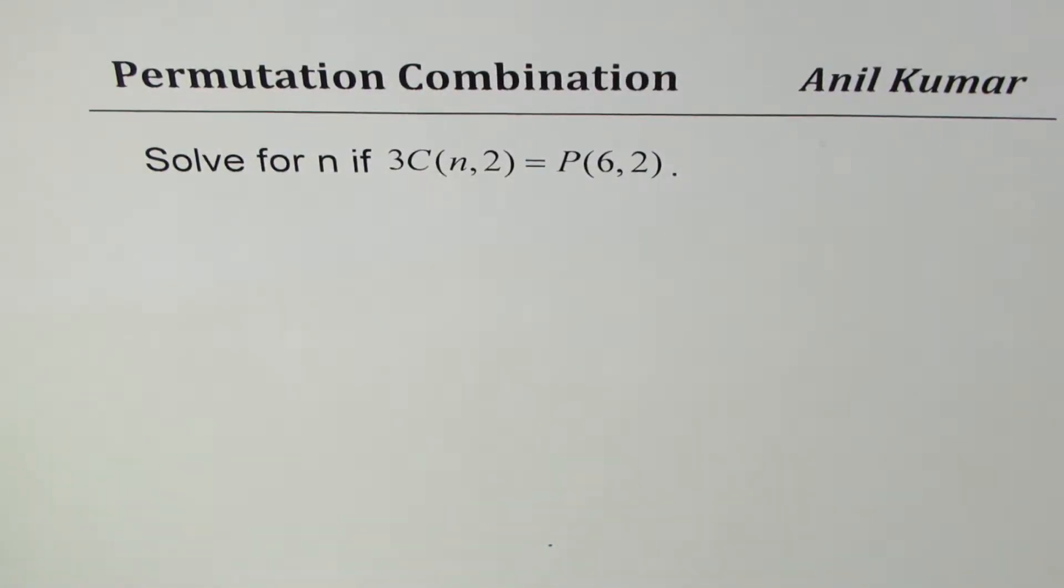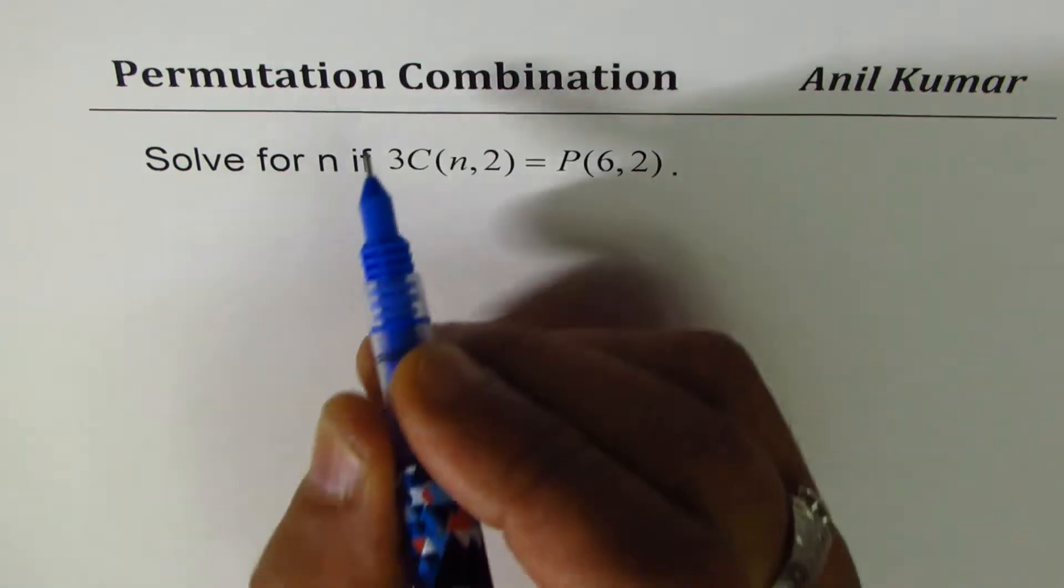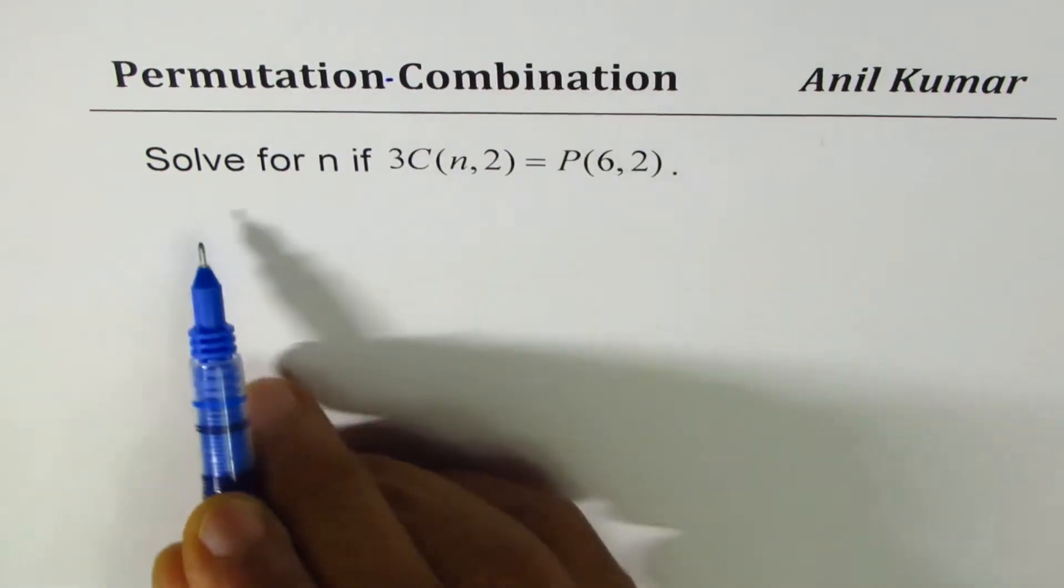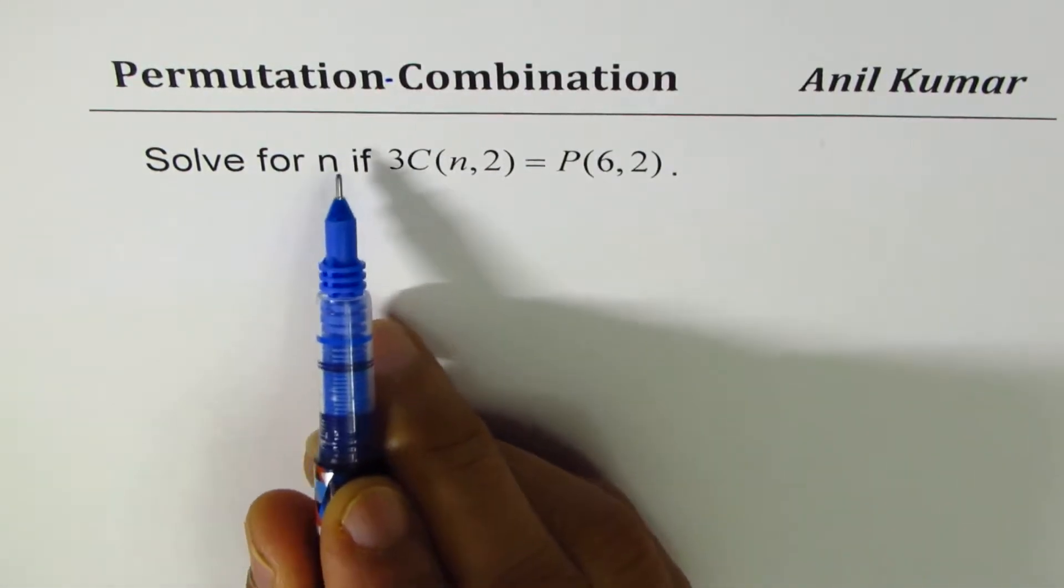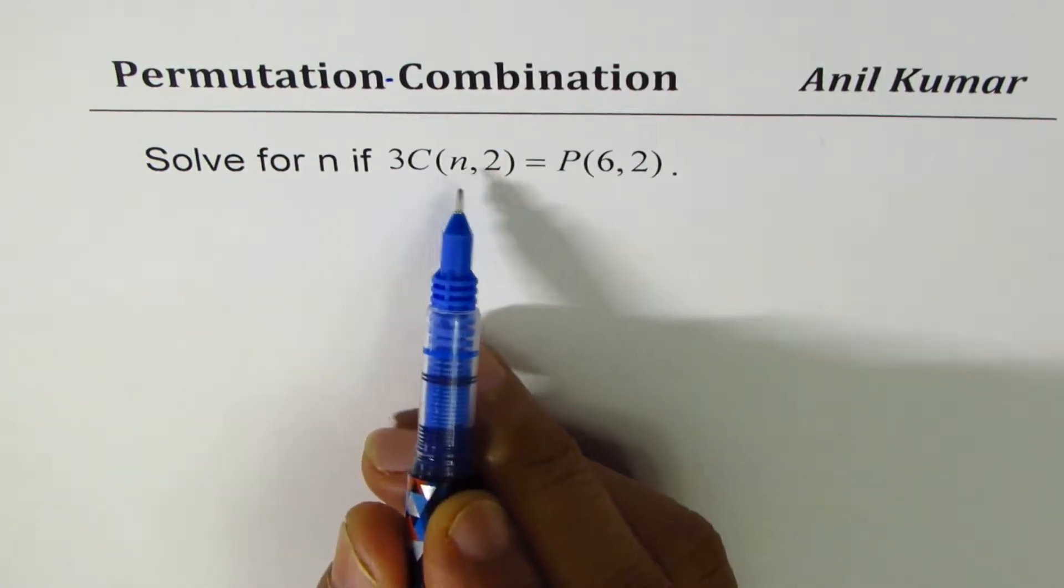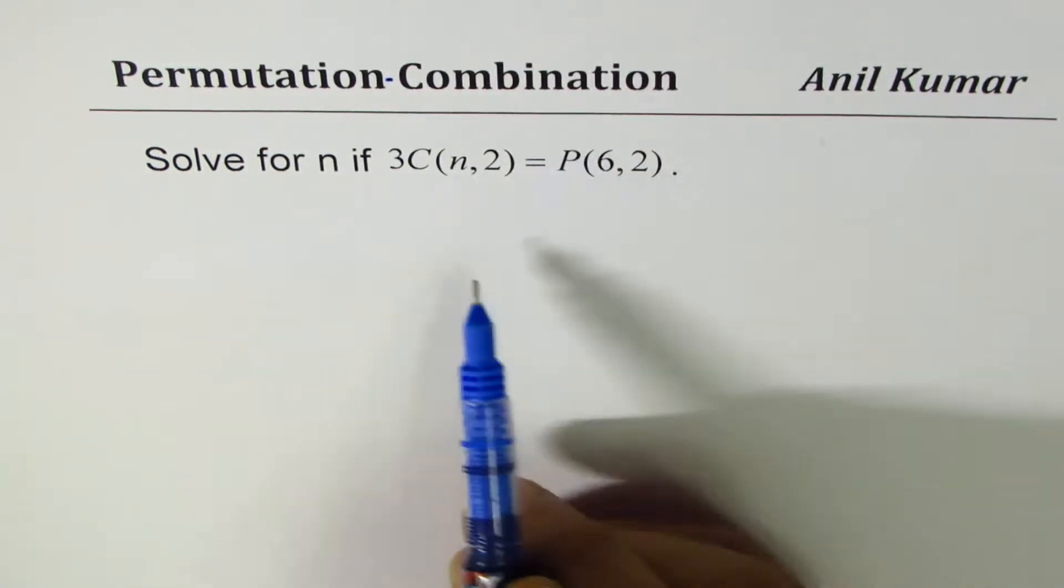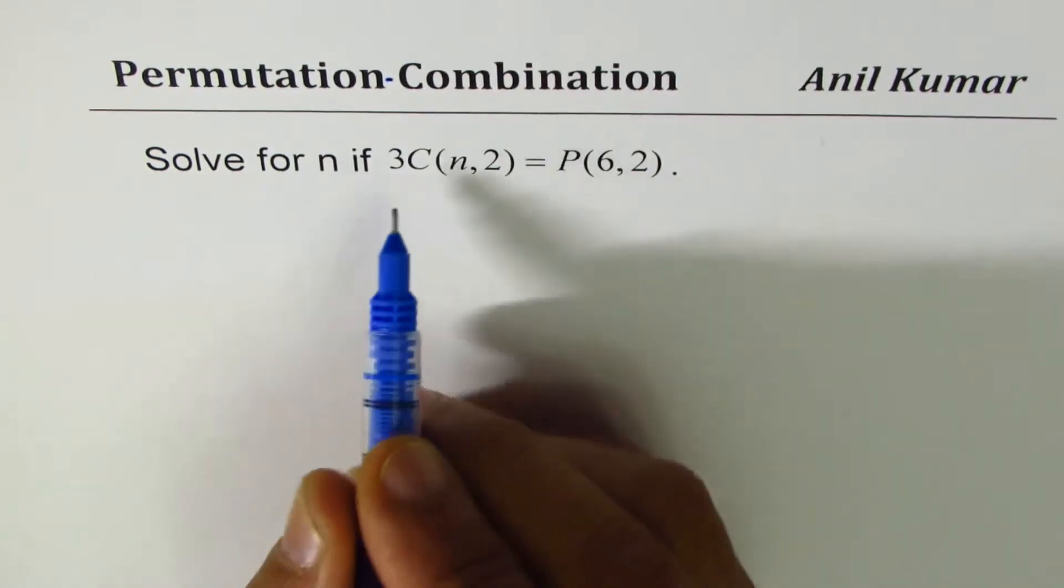I'm Anil Kumar and in this video we will understand how to solve equations involving combinations and permutations. The question here is solve for n if 3C(n,2) equals P(6,2).